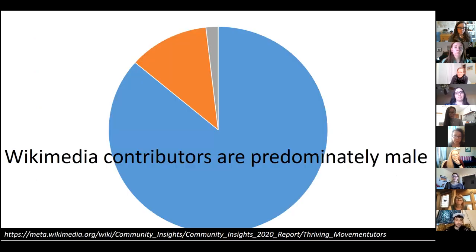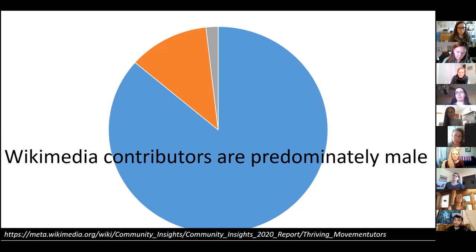Another important piece is Wikimedia contributors. Wikimedia and Wikipedia contributors are predominantly male. The most recent community insight survey shows that only 12 percent of contributors to the community identified as female and less than two percent as non-binary.